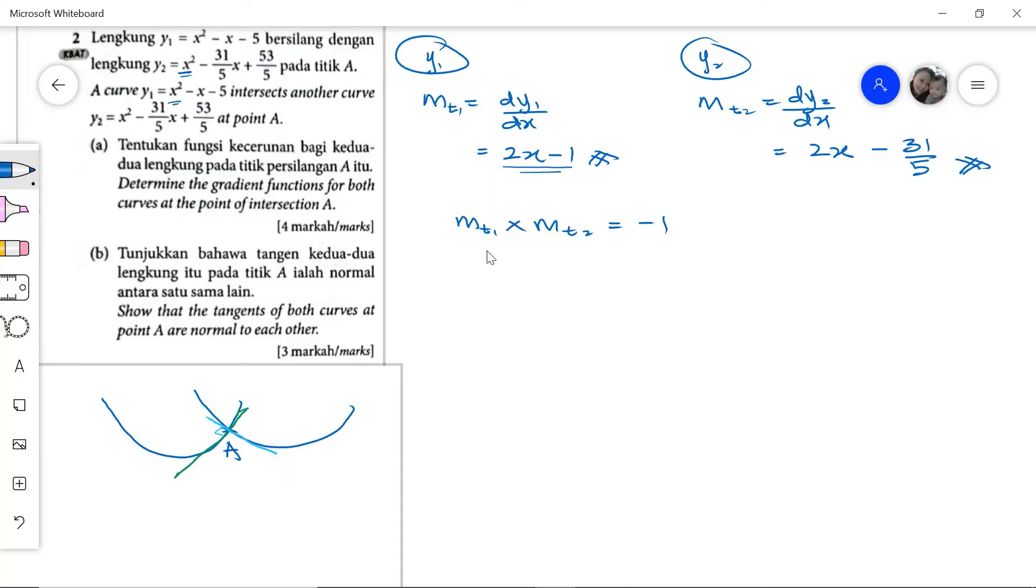But we do not have the exact value of the gradient of the tangent at point A because we do not know the x coordinate for A. Without the x coordinate, we can't get the exact gradient at point A. This is just the gradient function, applicable to all points along the graph. We need a specific x value, so we have to find the point of intersection A.